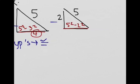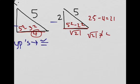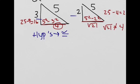5² - 2² is 25 - 4, which equals 21. √21 is not equal to 4. So therefore, these triangles are not congruent.